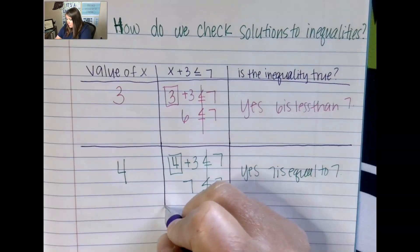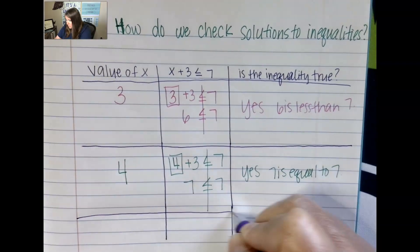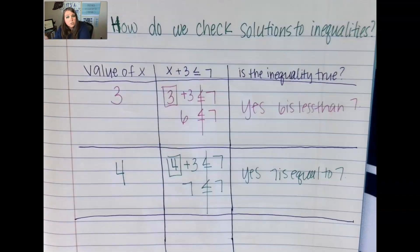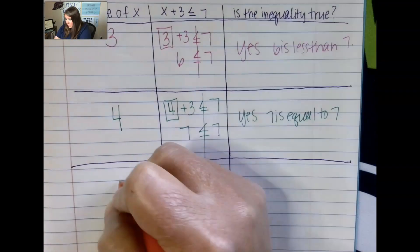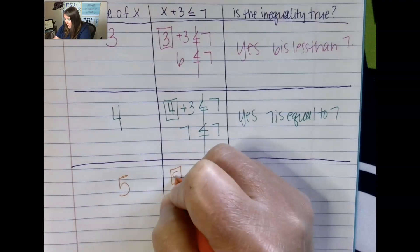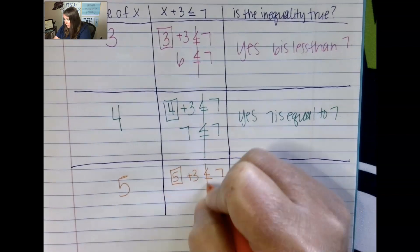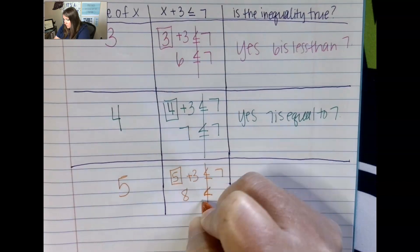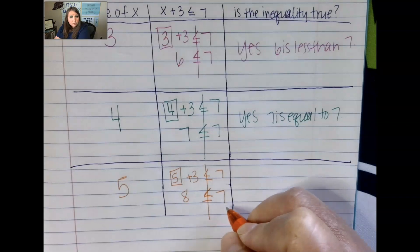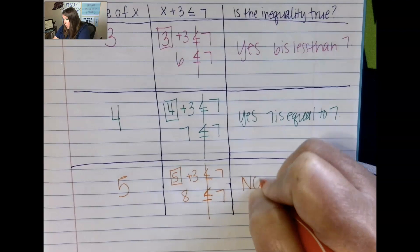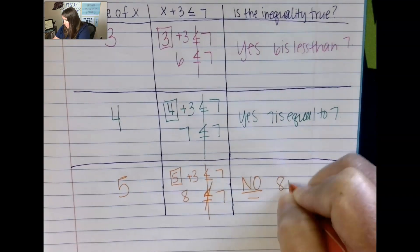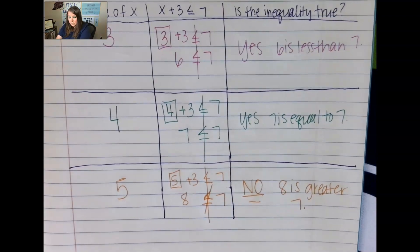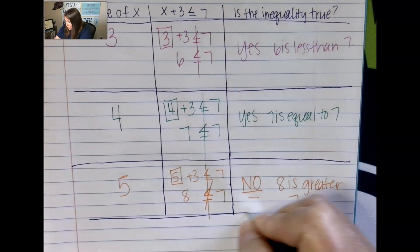Now let's look at another example. We're looking at how to substitute in and check solutions. This time they give us a 5, so I'm going to put 5 in for x: 5 plus 3 is less than or equal to 7. 5 plus 3 is 8. Is 8 less than or equal to 7? No — 8 is greater than 7, so this one does not work.